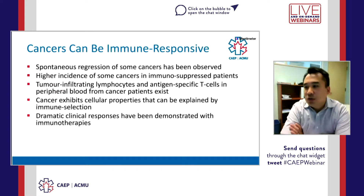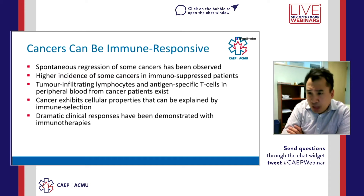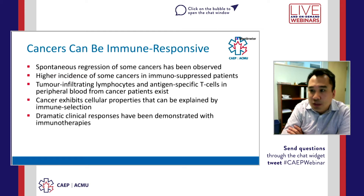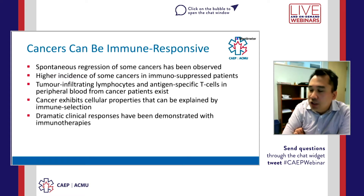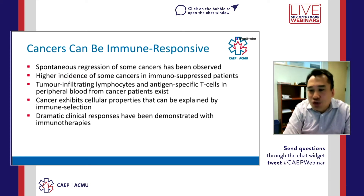We know that cancers are immune responsive, partly because spontaneous regressions of some cancers have been observed, and we believe this phenomenon is due to immune recognition. Cancers occur more frequently in immunosuppressed patients. When tumors are excised and pathologists examine them, there are tumor-infiltrating lymphocytes — white blood cells that recognize cancers as foreign and act on them. Cancers also exhibit cellular properties explained by immune selection, such as downregulation of MHC class molecules or upregulation of cytokines such as TGF-beta. There have also been dramatic clinical responses demonstrated with immune therapies.